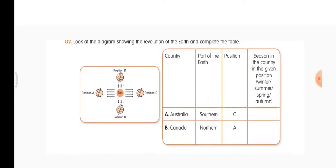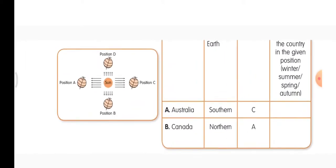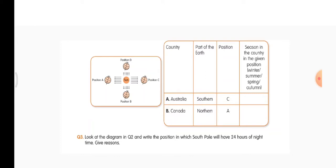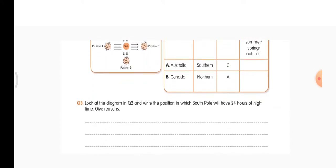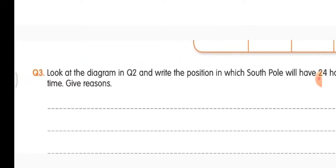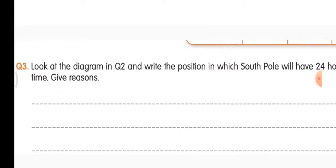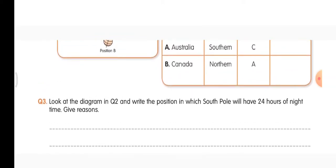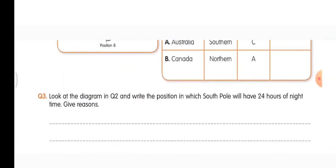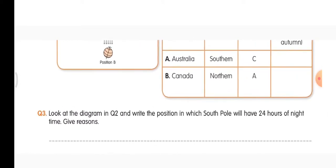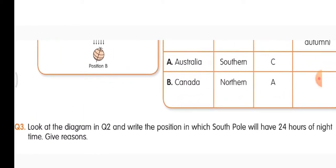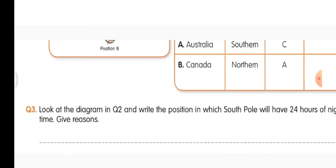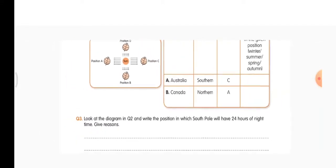Australia will have winter. In the blanks, on the top write winter and the box at the bottom, summer. Question three: look at the diagram in question two and write the position in which the south pole will have 24 hours of night time. Position B will have 24 hours of night time because it is away from the sun's light.